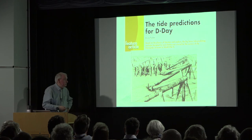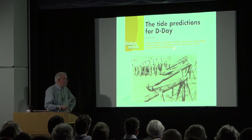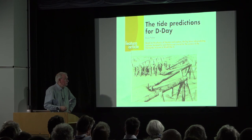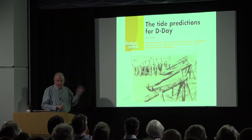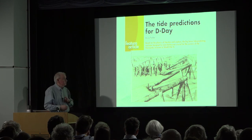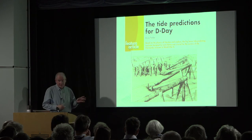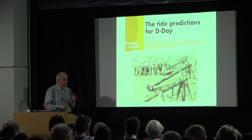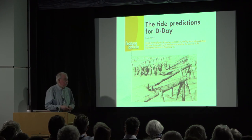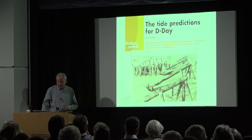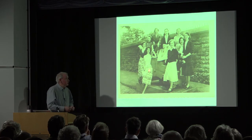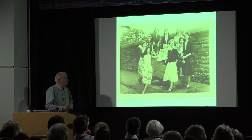Most notably, two of those machines were used to create tide predictions during World War II. This is Rommel inspecting the defences. The tidal predictions produced at Bidston for Allied landings in the Second World War were excellent. The Americans produced tidal predictions for use in the Pacific, and some of those were really bad with many consequences. Bidston did a very good job. All the work was done by teams of young ladies, and a couple of them are here today.